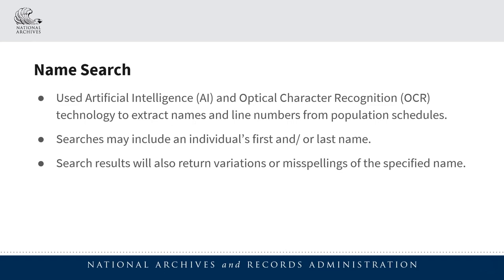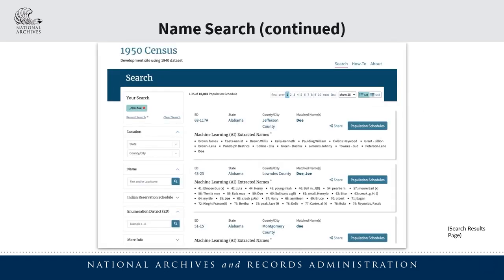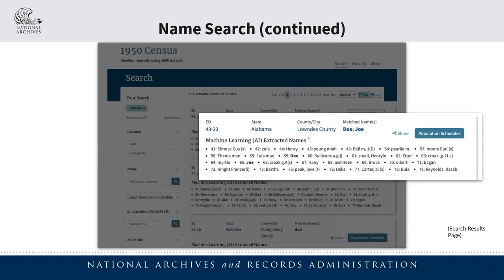The tool we used to extract the names from the schedules essentially scanned the handwriting and converted it to text. In instances where the writing wasn't clear, or where ink may have been faded, or where words may have been crossed out, those things greatly impacted the quality of the text extractions. This was also the case when extracting line numbers. Here we see the search results page. In this example, we've searched for the name John Doe, and we can see a number of results organized in rows. Here's a closer look at one of the results — at the top we can see the ED or enumeration district number, the state, county or city, and names found in the associated population schedule that match or may be close variations of the name we searched for.